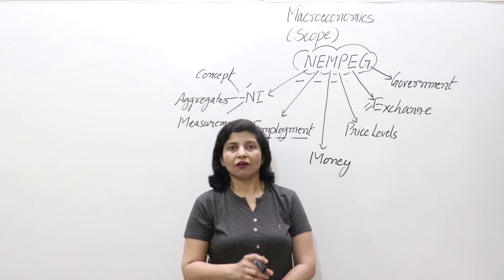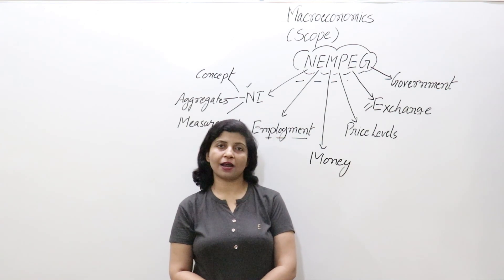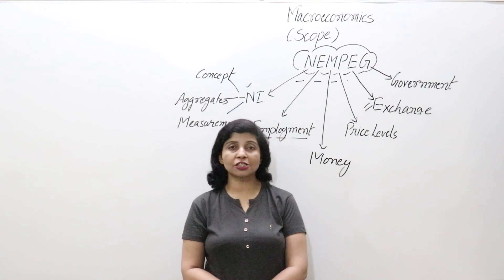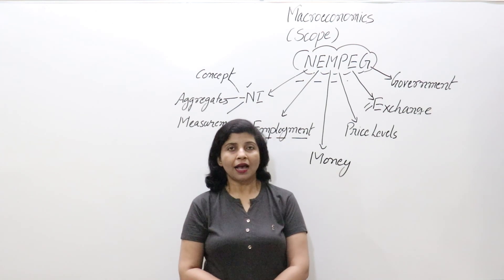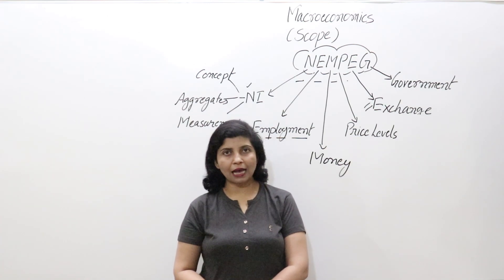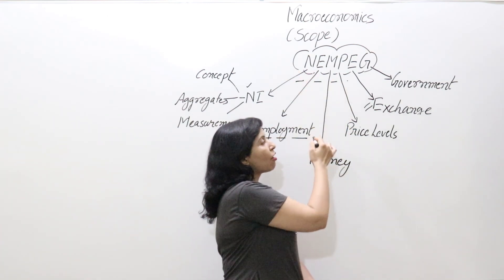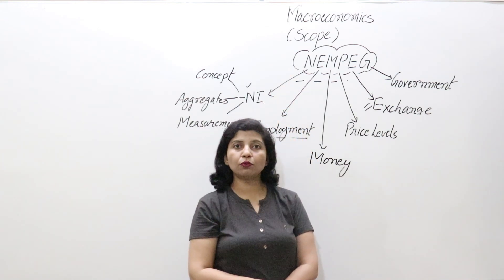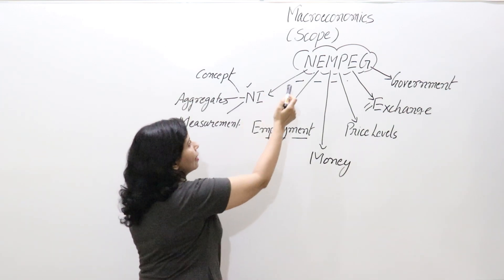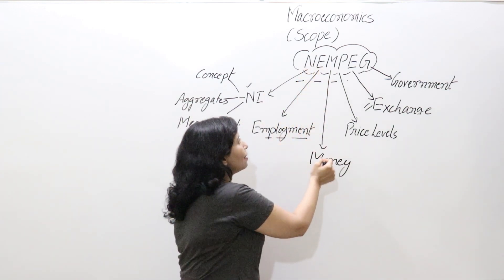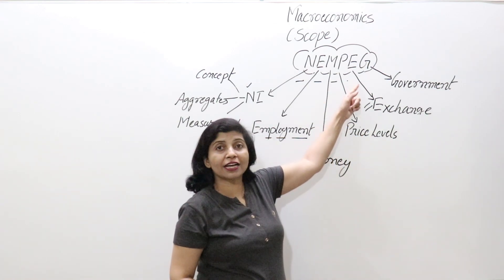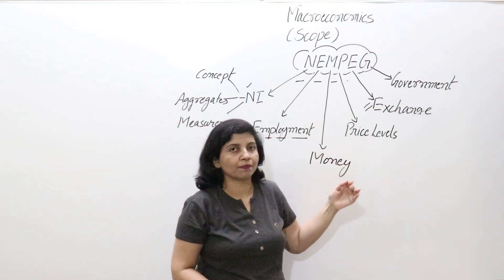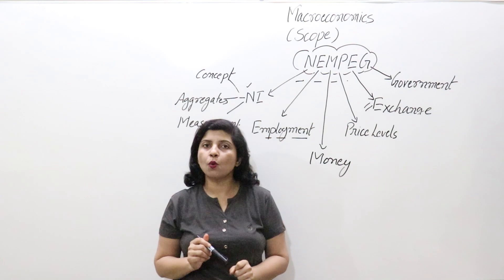The code is NEMPEG — N, E, M, P, E, G. N stands for national income, E for employment, M for money, P for price levels, E for exchange rate, and G for government. It's simple to memorize. In the exam, just remember this code and the concepts related to each letter.